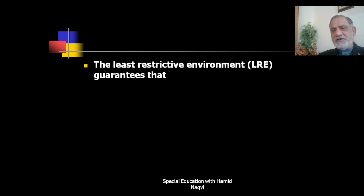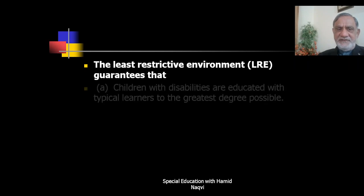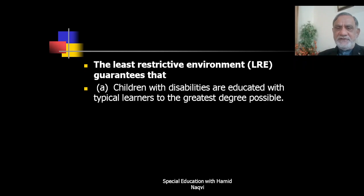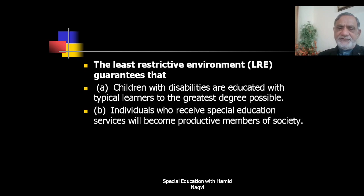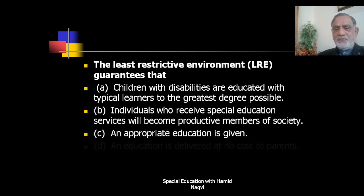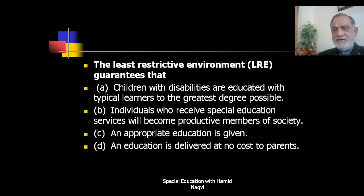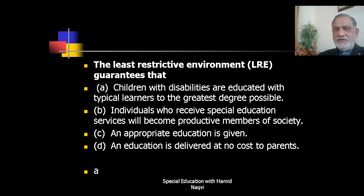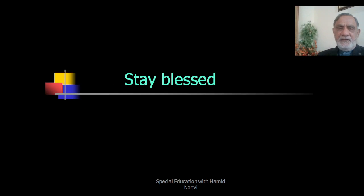Next question: The least restrictive environment (LRE) guarantees that — children with disabilities are educated with typical learners to the greatest degree possible, individuals who receive special education services will become productive members of society, appropriate education is given, or education is delivered at no cost to parents. The correct answer is A — LRE means children with disabilities are educated with typical learners to the greatest degree possible. That is all for today. See you in the next video. Stay blessed.